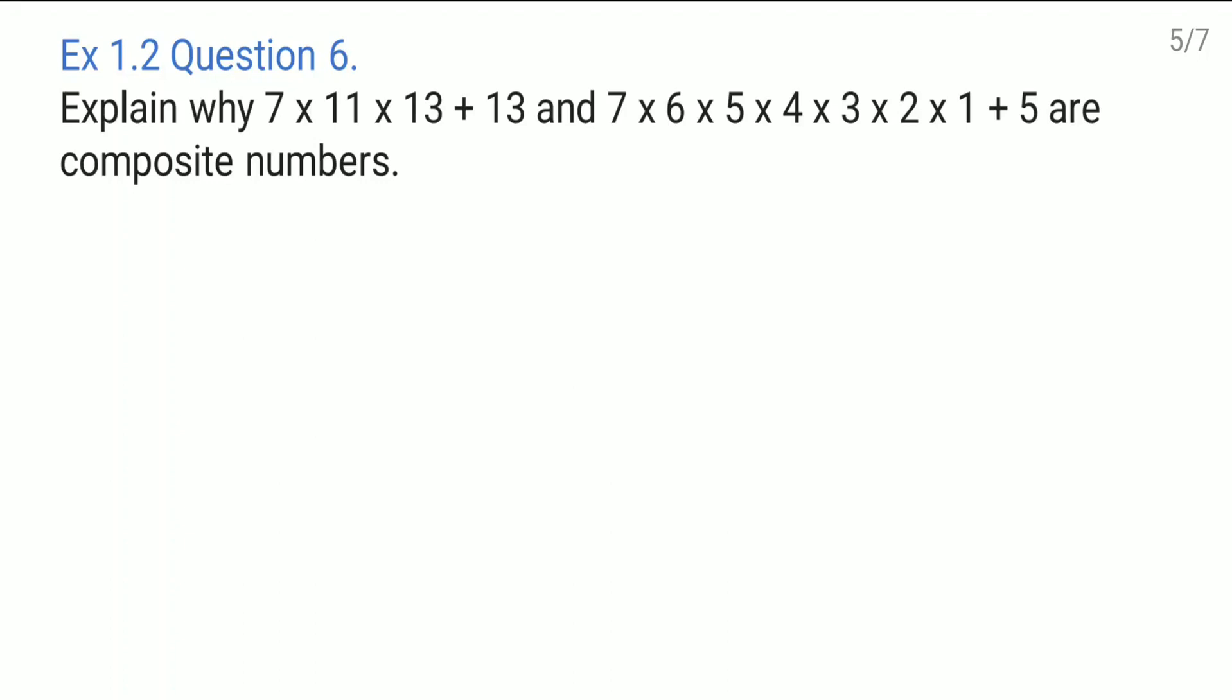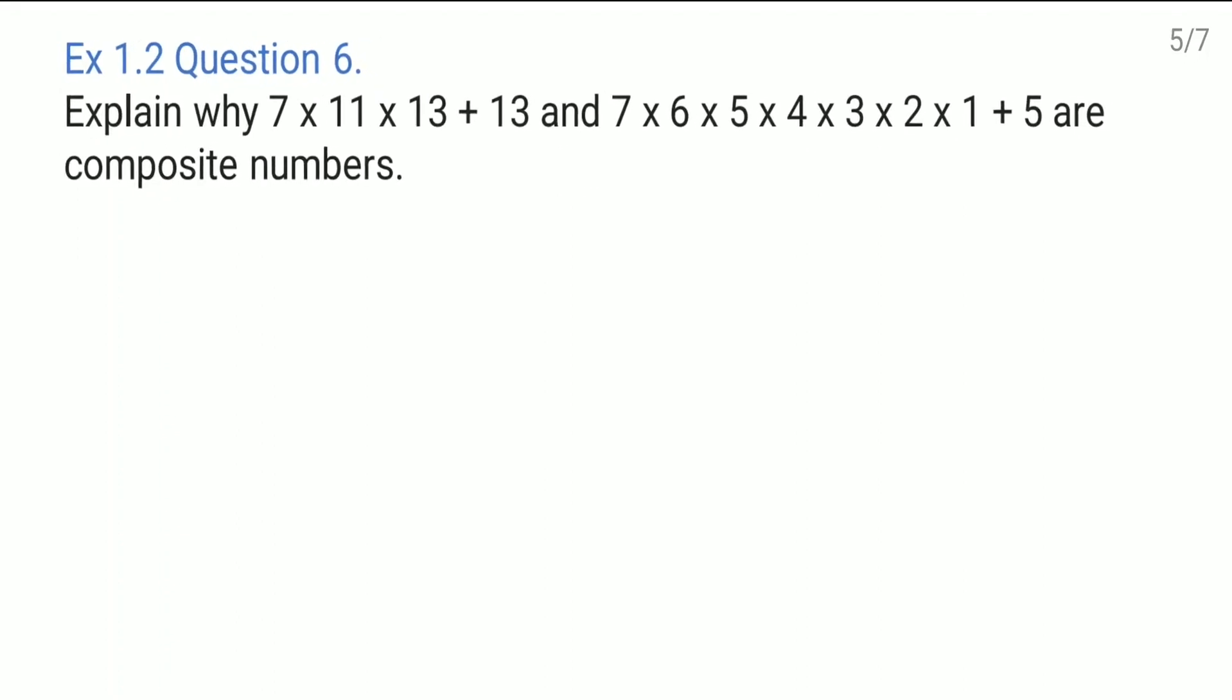First try to understand what are composite numbers. Composite numbers are those who are having more than two factors. Suppose I am writing here 5. So here 5 I can write down 1 into 5. Only two factors, not more than two factors. So it is not a composite number.